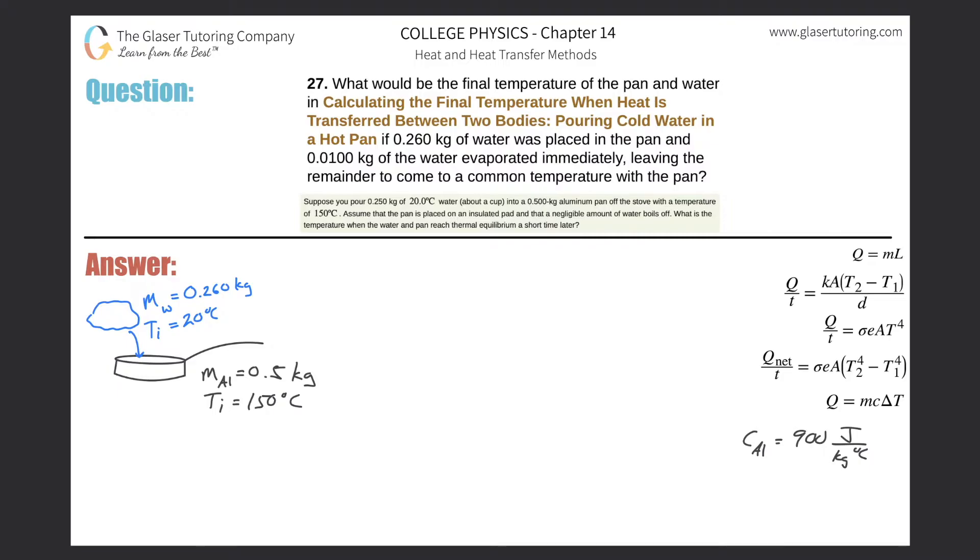Number 27: What would be the final temperature of the pan and water if 0.26 kilograms of water was placed in the pan and 0.01 kilograms of the water evaporated immediately? This is the information that we need. We have an initial mass of water of 0.26 kilograms, and the initial temperature of that water is 20 degrees Celsius.